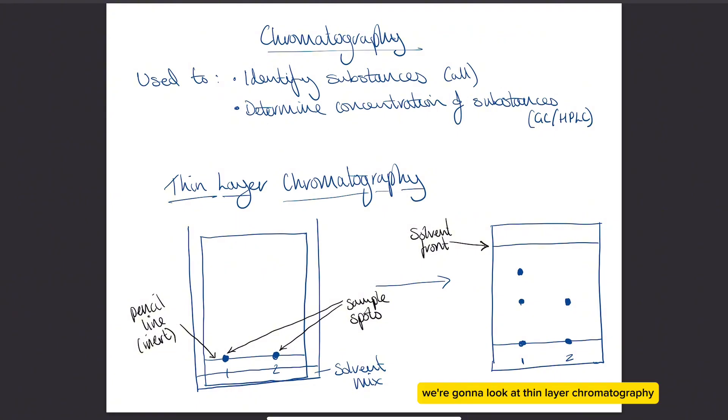So first of all we're going to look at thin layer chromatography, which can also be called TLC. This type of chromatography can only be used to identify substances that are present in a mixture. You can't use it to determine how much of something you have, you can only use it to determine what you have.